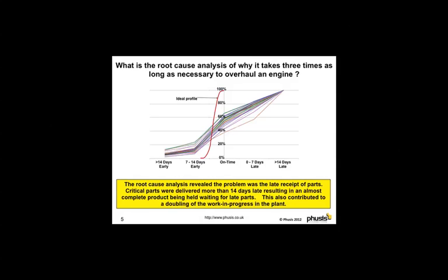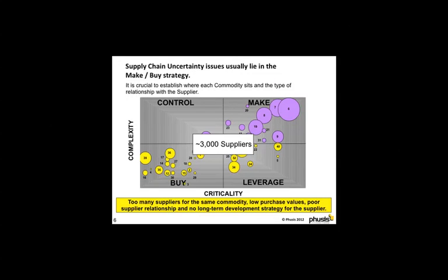So why is supply chain uncertainty such an issue? Supply chain uncertainty issues usually have their root in the make-buy strategy. Typically, clients have around 3,000 suppliers for a small number of commodities. This results in too many suppliers for a small number of commodities and low purchase values. It stands to reason that if you're not a key customer to the supplier and problems arise, priority will be given to key customers — not you.